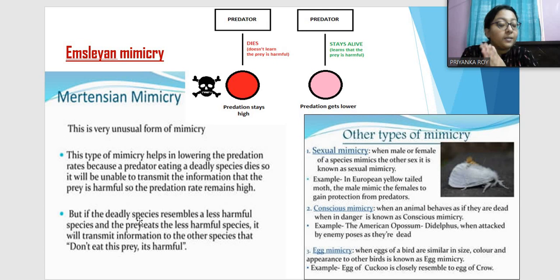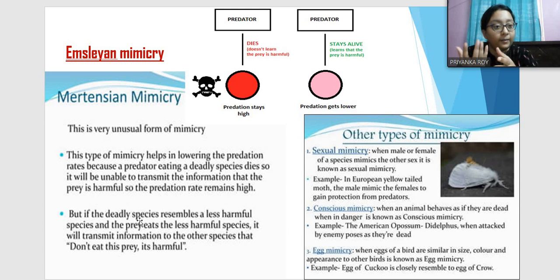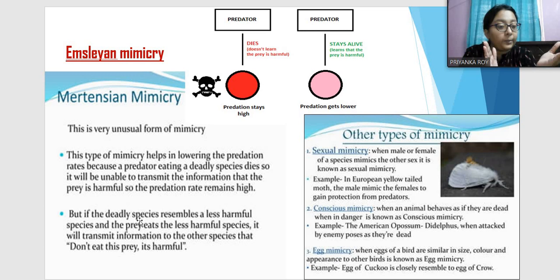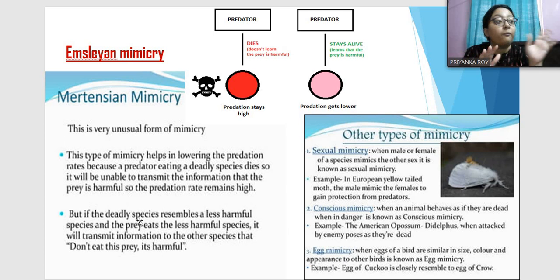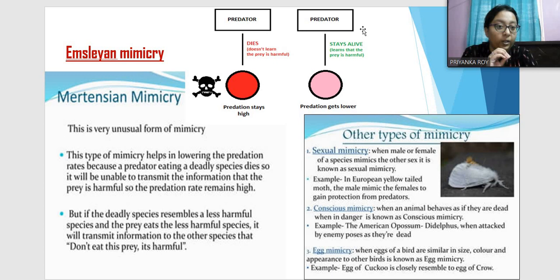So for information to be passed on to other predators, the deadly organism mimics a less deadly one. When predators already know this organism is slightly harmful, they will not eat it, increasing the deadly species' chances of survival. The predator stays alive, learns the prey is harmful, and the predation rate gets lower. This is Martensian mimicry.